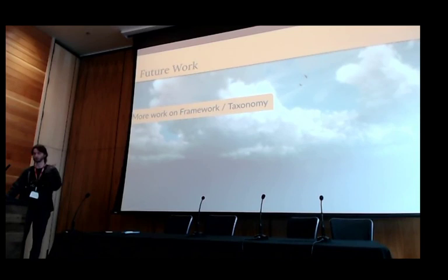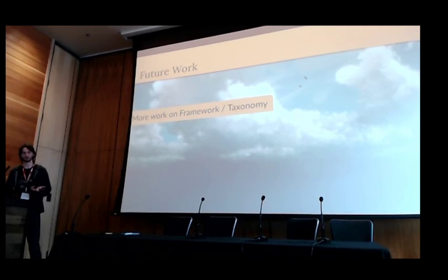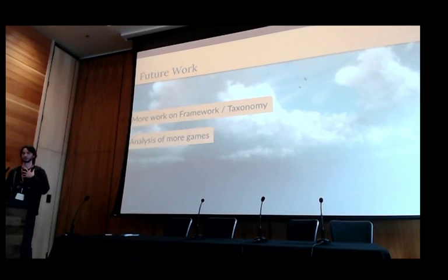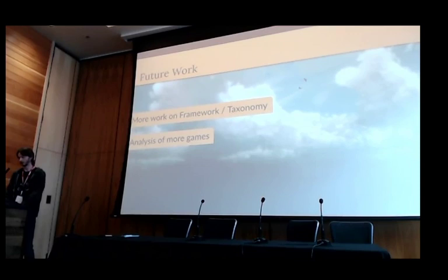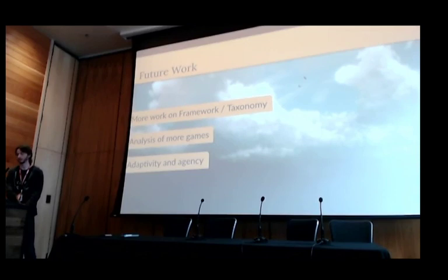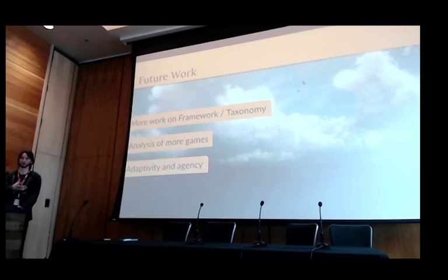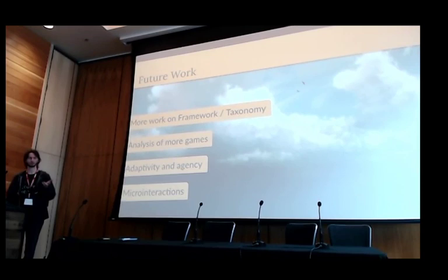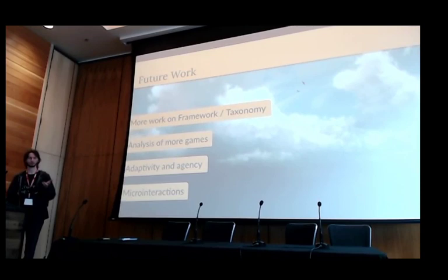As I said, this is very early work and it requires more details, more rigorous work in a framework — or definitions of what we're talking about. That requires analysis of more games, more titles. Several reviewers mentioned that it would be interesting to look at the relationship between adaptivity and agency, and this is a really good point — especially what happens when players realize how the adaptivity is working and start scheming it, which would probably break it down and move it to a whole other category. Another reviewer mentioned micro-interactions for the types of interactions discussed, and that could also be interesting. That's it — thank you.